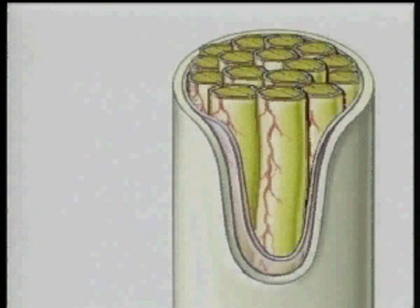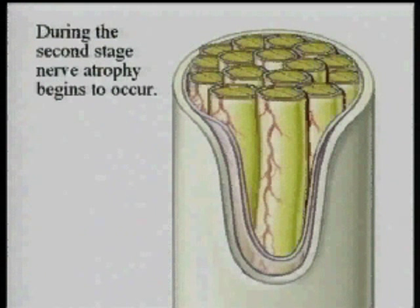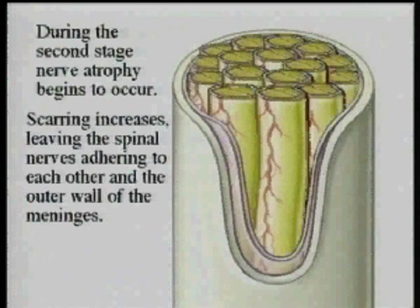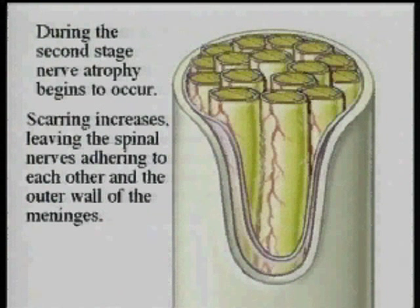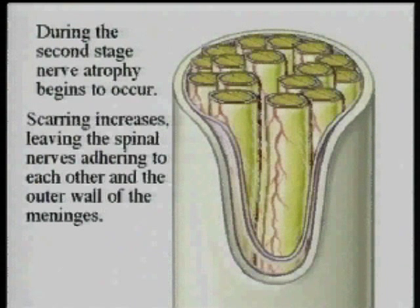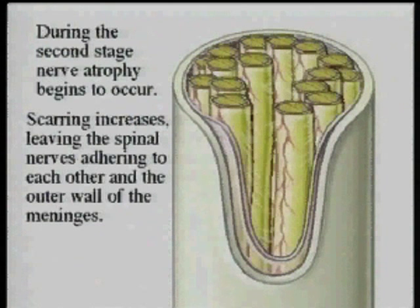The limitation of this is the dural sac itself. As time progresses, the second stage begins, and this is of nerve atrophy. Scarring begins to increase, and the production of collagen fibrils by the fibroblasts produces scar tissue, which causes the nerves to adhere not only to each other, but directly to the arachnoid and to the dura.